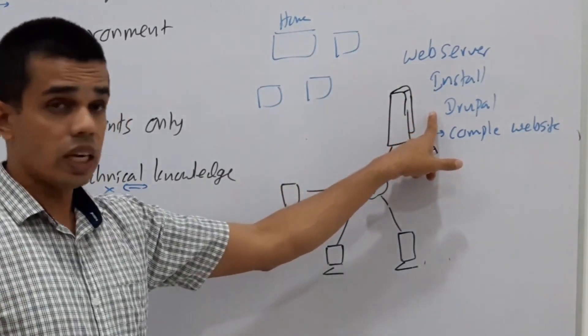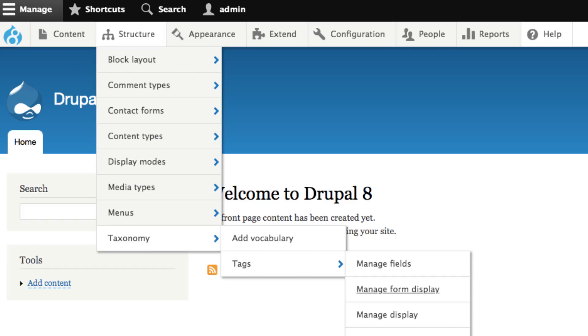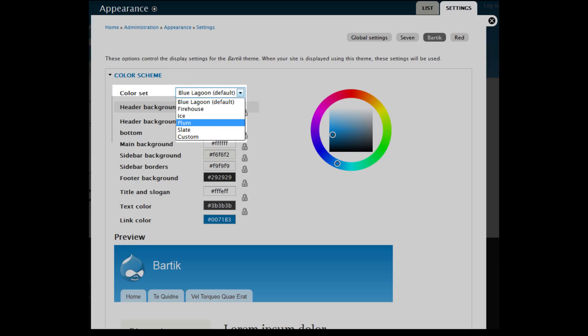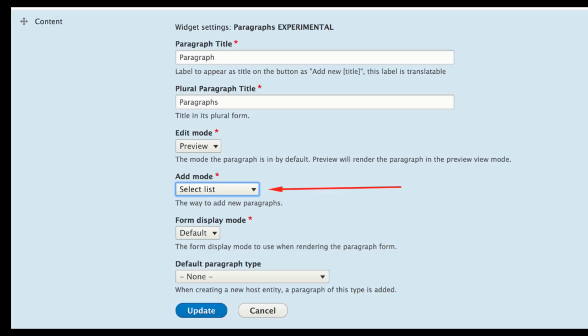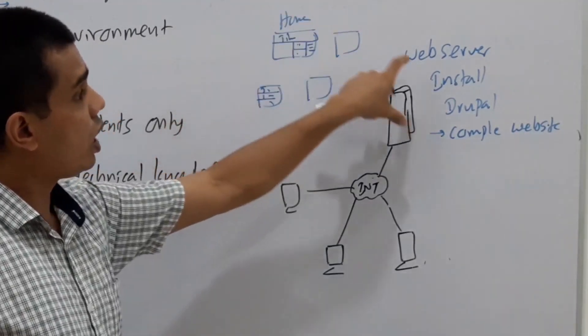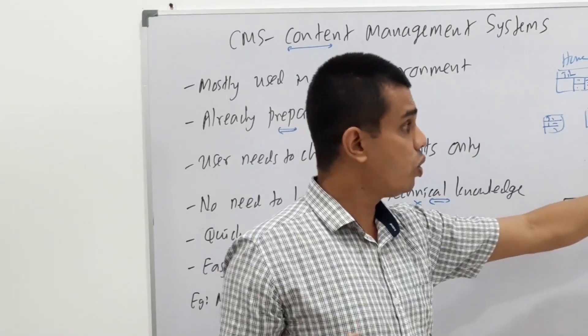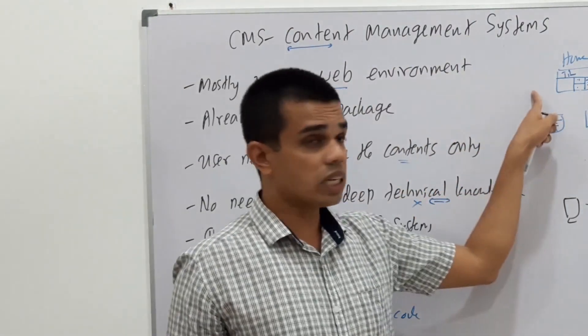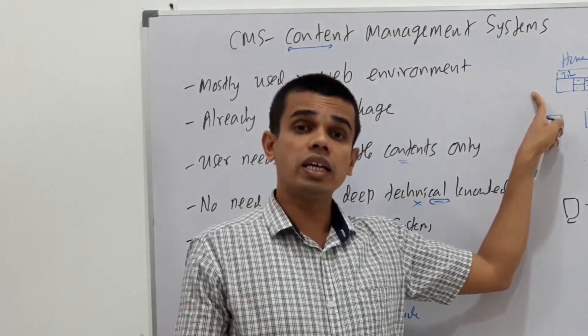What Drupal does is, it installs the package into the computer and creates sample websites using HTML. I don't want to know any HTML tag here. What we can do is, under the Drupal package, we can go to the control panel and I can change the content. What is the title of the home page? How many hyperlinks are to be included? What are the images to be added into the web page? I can select them and add them. That's the point behind content management.